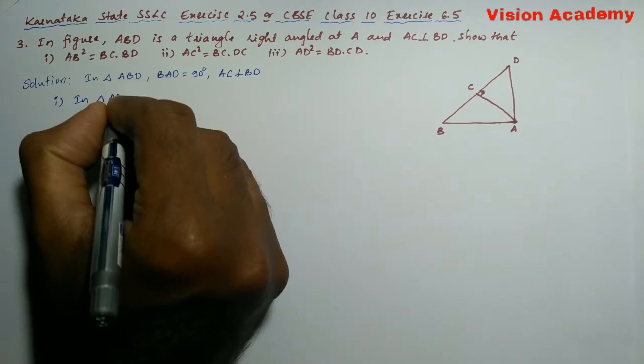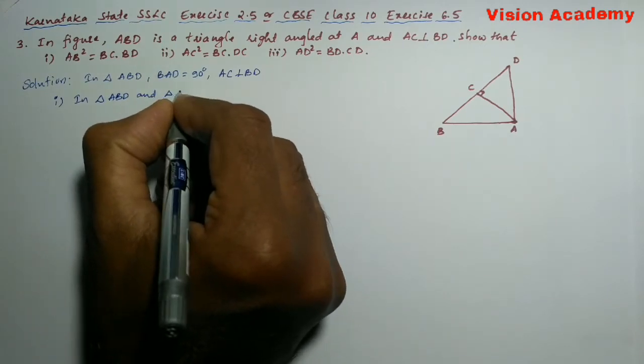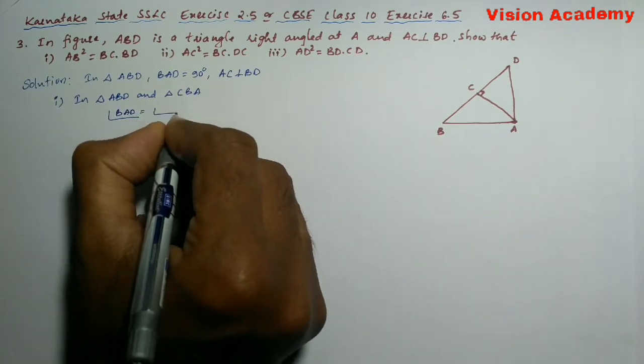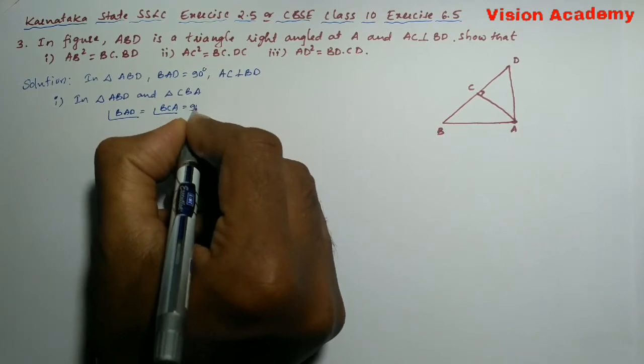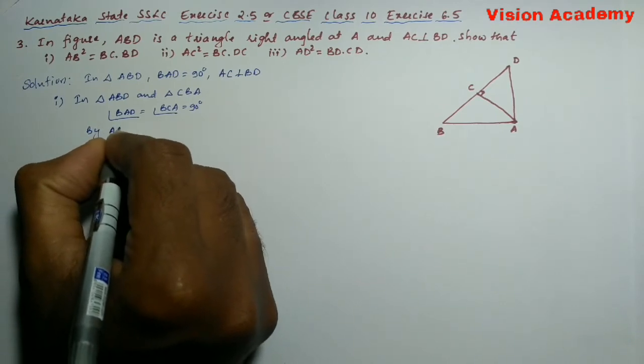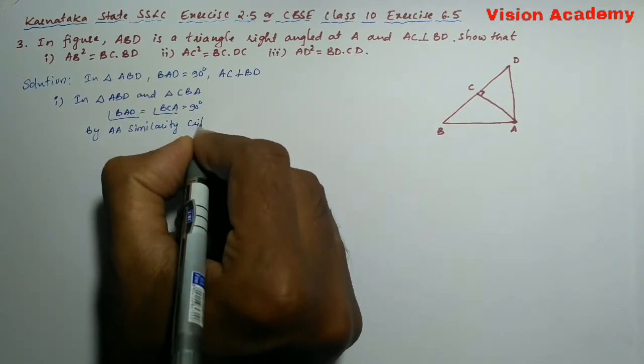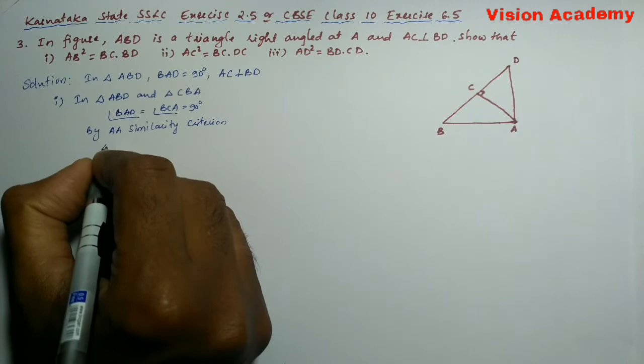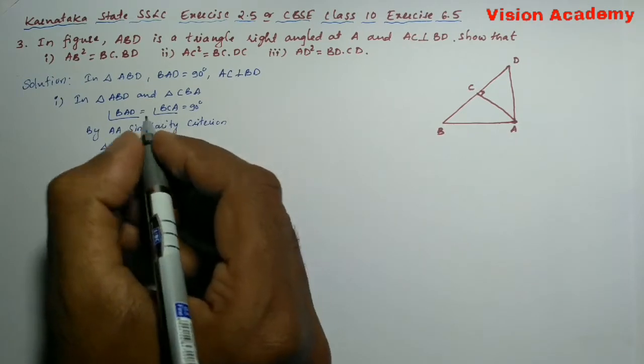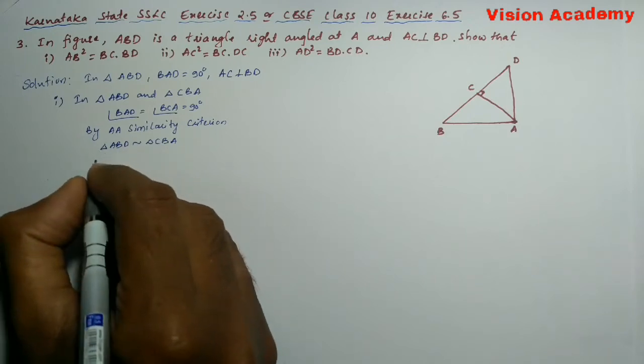In triangle ABD and triangle CBA, angle BAD is equal to angle BCA is equal to 90 degrees. Here by angle-angle similarity criterion, we can say that triangle ABD is similar to triangle CBA. Here once the triangles are similar, then their corresponding sides are in proportion. So therefore,